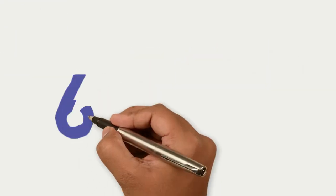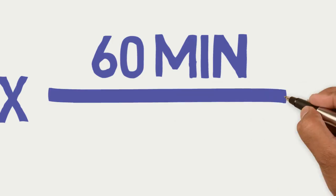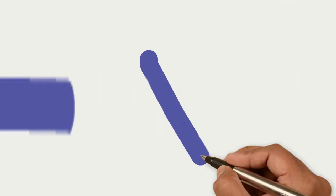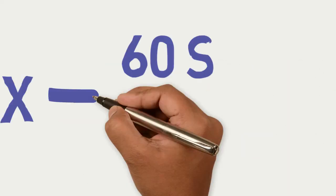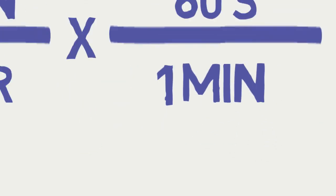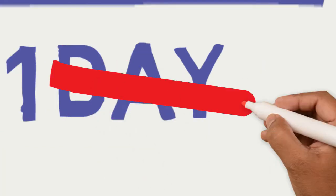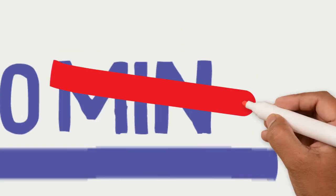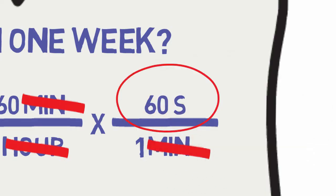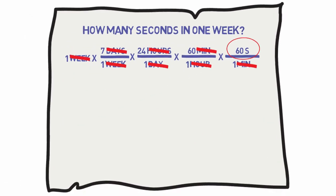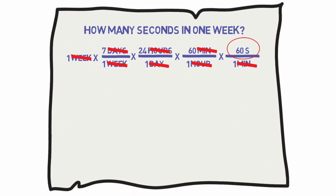The conversion factors we need to solve this problem are seven days in one week, 24 hours in one day, 60 minutes in one hour, and 60 seconds in one minute. After arranging the calculation, make sure the units cancel. Since we have set this problem up as a series of fraction multiplications and divisions, the units in the numerators are divided by the units in the denominators. A unit in the numerator cancels out if the same unit appears in the denominator somewhere in the calculation.